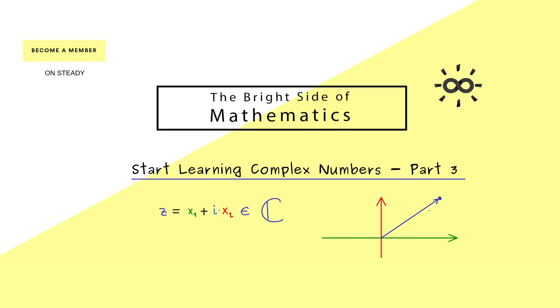Also we've learned in the last video that such a complex number z can be visualized in this complex plane. There we find x₁ on the x axis and x₂ on the y axis. So x₁ and x₂ are just ordinary real numbers.